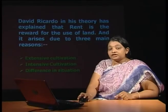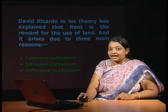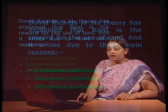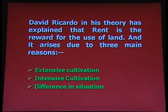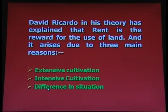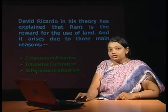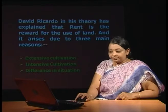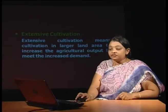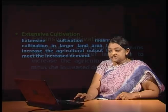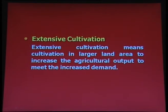On the basis of these assumptions, David Ricardo has given his theory. According to his theory, rent is the reward for the use of land and it arises due to three main reasons: extensive cultivation, intensive cultivation, and difference in situation. First of all, let us talk about extensive cultivation. Extensive cultivation means cultivation in a larger land area to increase agricultural output to meet increased demand.